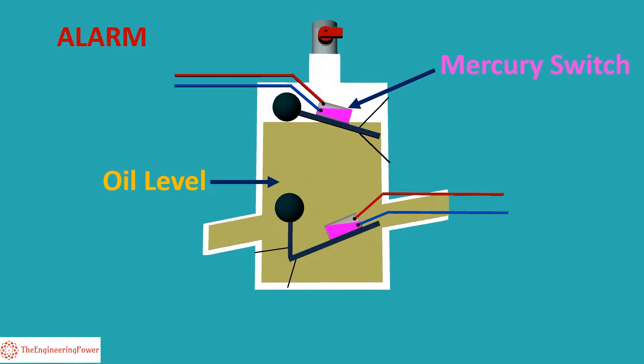A mercury switch is installed on the float in such a way that its alignment and on-off status is controlled by the position of the float. The mercury switch is connected to the alarm circuit.